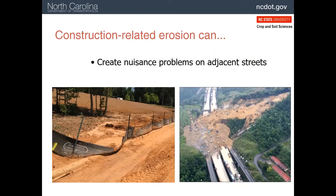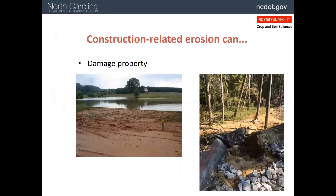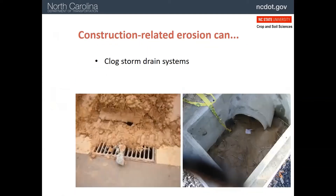Poorly managed construction sites can generate problems on adjacent roadways. Here we have a slope with an overwhelmed silt fence, and here we have a silt fence that wasn't doing very well at all. Construction-related erosion can damage property and off-site movement can cause a lot of problems. Sediment getting into storm drains is a big problem both because it clogs the pipes, but also because that sediment is likely heading towards a stream. If an inspector sees this, the contractor will have to find a way to get the sediment out of the pipes — very difficult and very expensive.